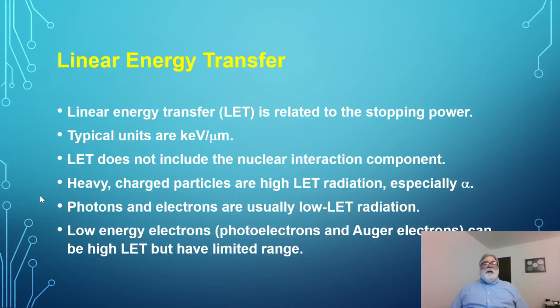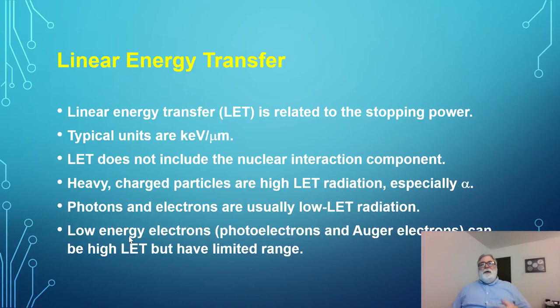Photons are typically the reference radiation by which all other radiations are measured. However, there are circumstances where low-energy electrons have a higher LET — remember, at the end of their path, electrons are traveling slowly and deposit more energy, just like the Bragg peak for heavier particles. Auger electrons have relatively low energy and deposit a lot of energy per unit length traveled, so they can have a higher LET than most photons and electrons. That's an exception to the general rule.